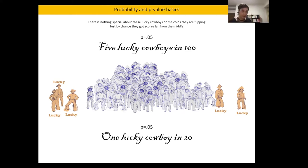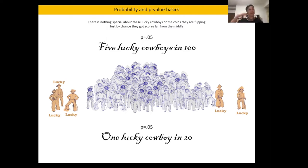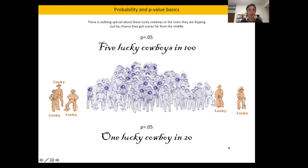So if we use the p-value of 0.05, all we mean is the five luckiest cowboys. If we assume there's nothing special about the cowboy and nothing special about the coin, a p-value of 0.05 represents those five most deviant responses. That's equivalent to one lucky cowboy in 20, and this is really important for how we design and analyze our studies.